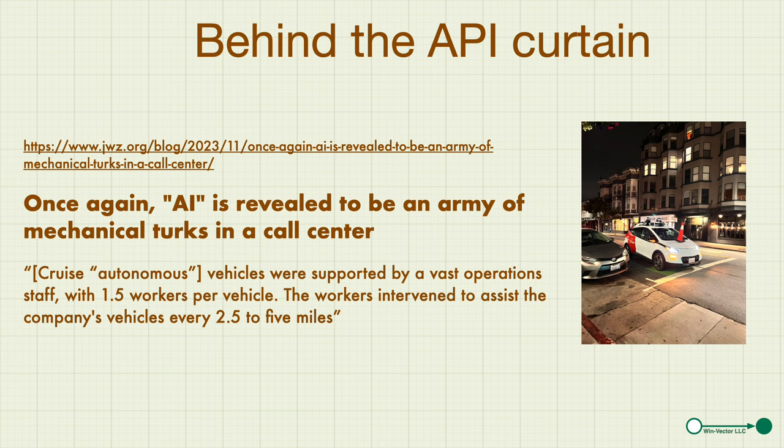Some recent news: it turns out the self-driving Cruise-brand cars had basically 1.5 support people on staff — the equivalent of 1.5 drivers, just not in the car — and called home over the cellular network approximately every 2.5 to 5 miles. So if you saw one of these cars in San Francisco driving down a city street, pausing at an intersection near a construction truck and then going on — did it actually solve the intersection as unusual, or did it ask home for instructions?